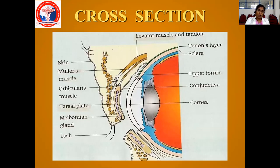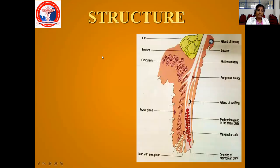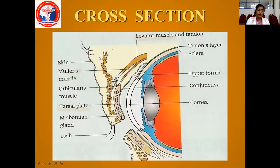Coming to the cross section. We just saw about the lid margin. The cross section consists of skin, then orbicularis muscle, then Müller's muscle. Behind Müller's muscle you have the tarsal plate, levator muscle, and Müller's muscle. Then you have the tarsal plate which has the meibomian glands — from these meibomian glands, all your sebum secretions come out into the tear film. And here you have the lashes. Into the eyeball you have the tenon's layer, sclera, upper fornix, conjunctiva, and the cornea.